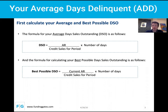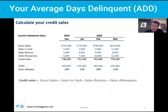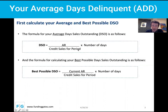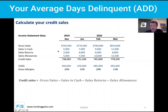The second thing you need to calculate is your Best Possible DSO, which is basically your current accounts receivables — the receivables that are not yet past due — divided by your credit sales for the period, multiplied by the number of days. To calculate credit sales, which is the denominator in both formulas, you look at your income statement and take your gross sales, then subtract your sales in cash, sales returns, or any sales allowances.